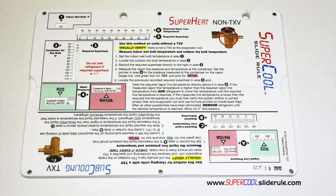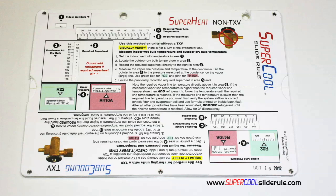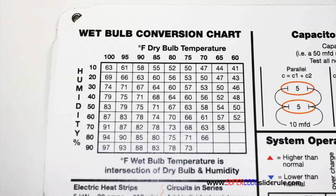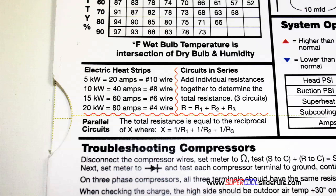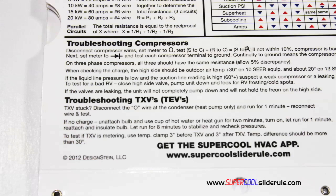This one tool will allow you to charge a system with R-22 or R-410A in either the superheat or subcooling method. The back cover contains required formulas, capacitor rules and practices, a wet bulb conversion chart, how to perform computations on series or parallel circuits, an electric heat strip guide, and a complete system troubleshooting diagnostic chart.